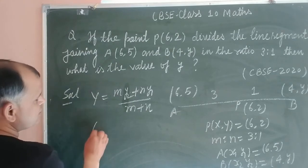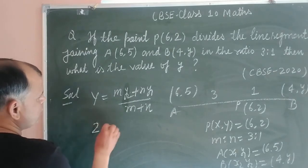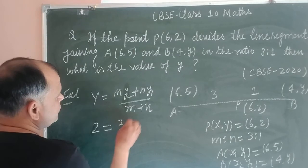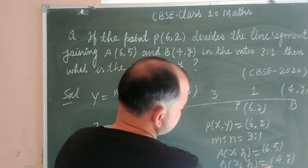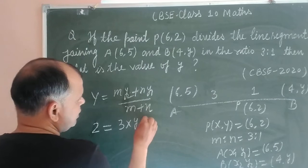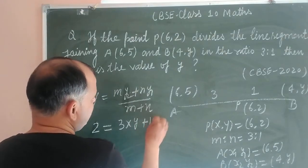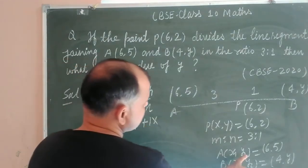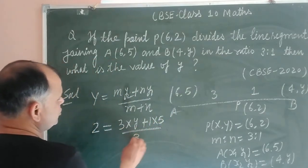Here Y is given to us as 2. So 2 = (3×Y + 1×5)/(3+1).